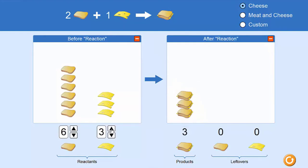But what if we muck up the ratio of reactants and put in five slices of cheese? What happens is that the bread runs out before all the cheese has reacted and we're left with excess cheese, leftovers.